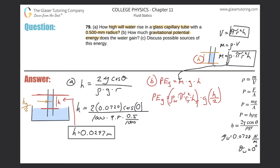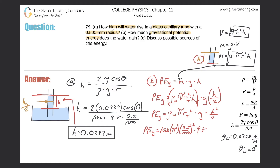So in the potential energy formula we use h/2 for the height gained. Combining the two height terms, the formula simplifies to: PE = density × π × r² × g × h² / 2. Now plugging in values: density = 1000, radius = 0.5/1000 m (squared), gravity = 9.8, and the height obtained from part A = 0.0297 m, all divided by 2.